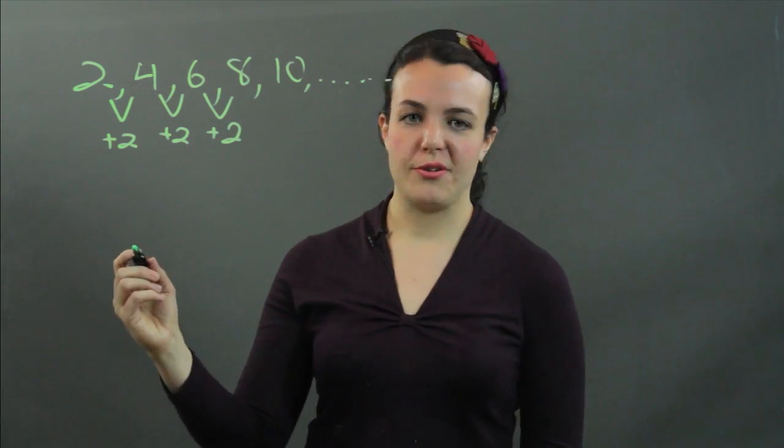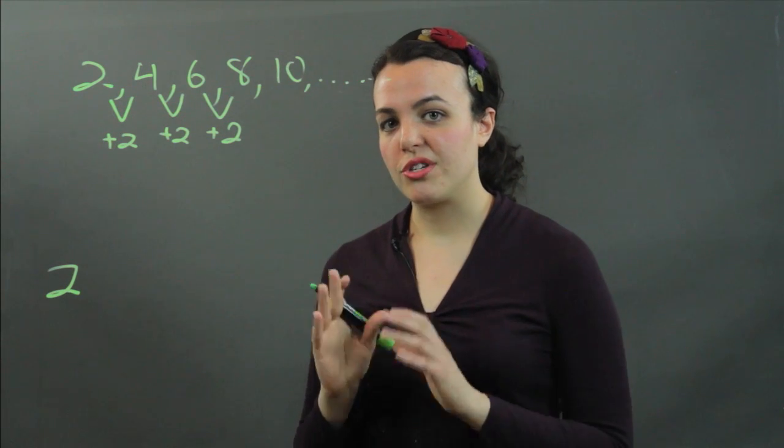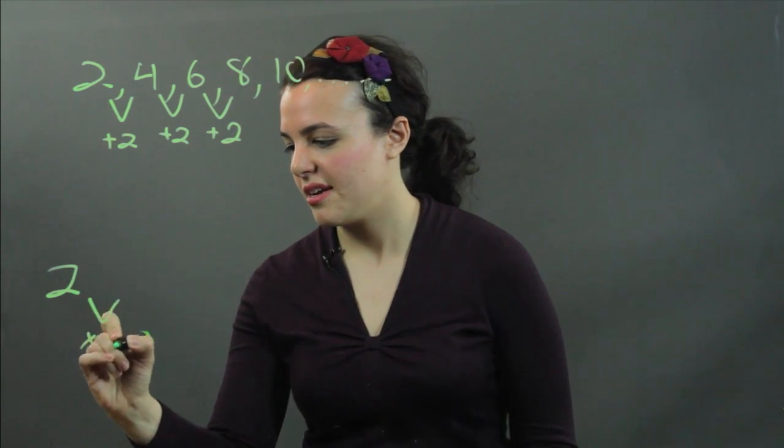So, let's start again with 2. That's a good number. And my common ratio, which is the number that I'm going to multiply by, is 2. Because again, we like that number.